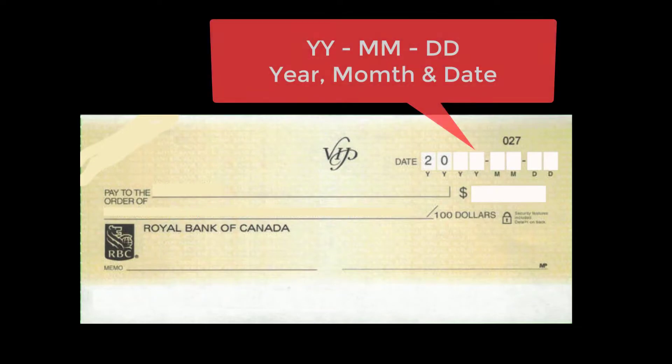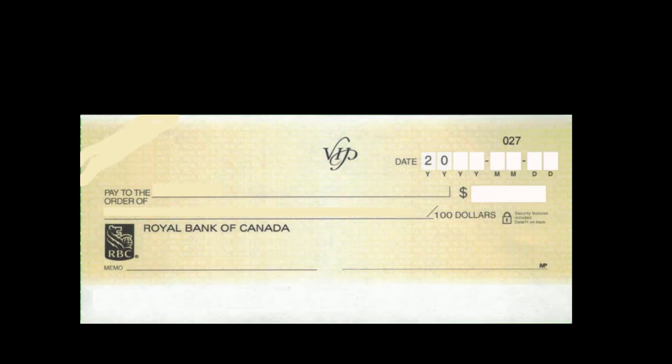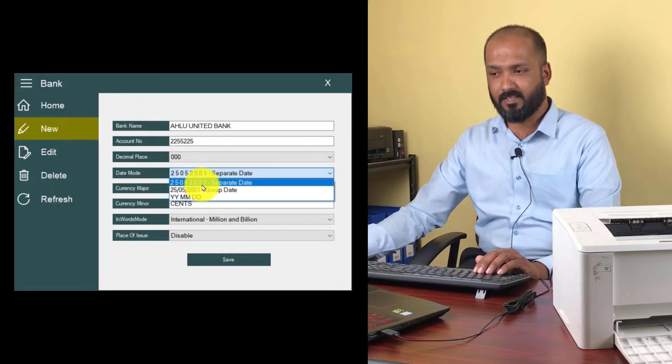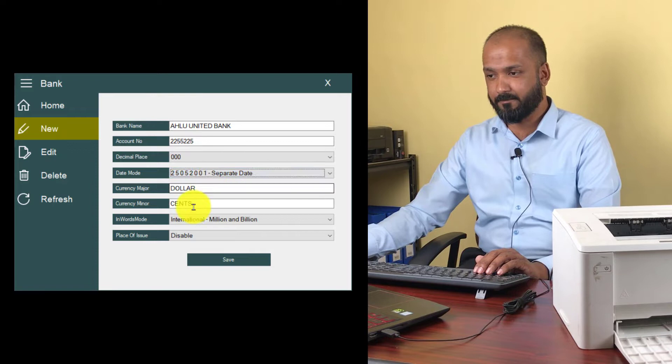For year, month and date — the first will be year, then month, then date. Some Canada checks come like that. In my case it will be separate date, so I am going to select separate date here.